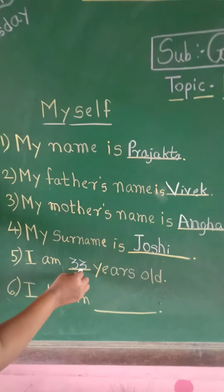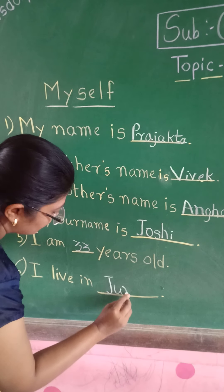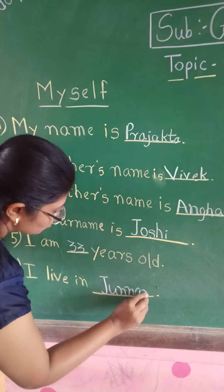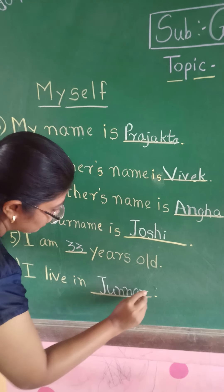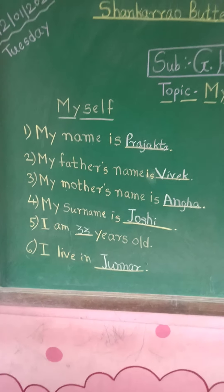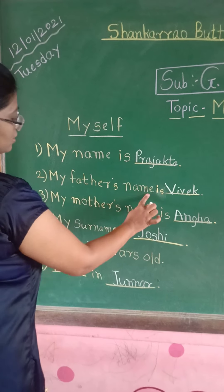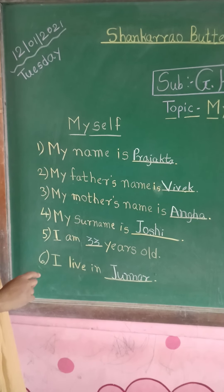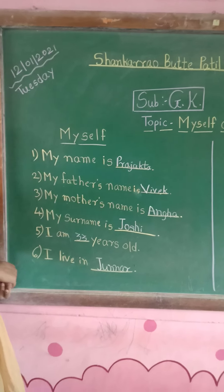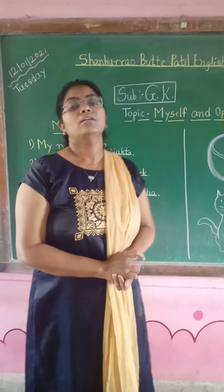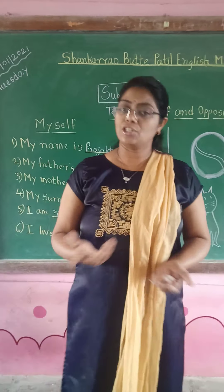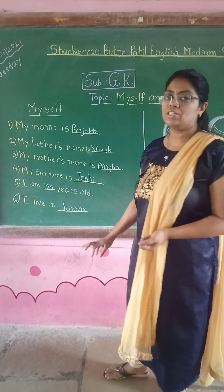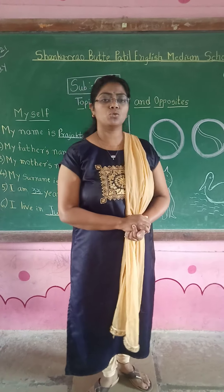I live in Zundar. You have to write the city or town name where you are living. So this is all about myself — your name, your father's name, your mother's name, your surname, your age, and where you live. You have to learn all these sentences and do practice of reading and writing also. In a GK paper you have to write this — not a full sentence, only names. So do practice of reading and writing.